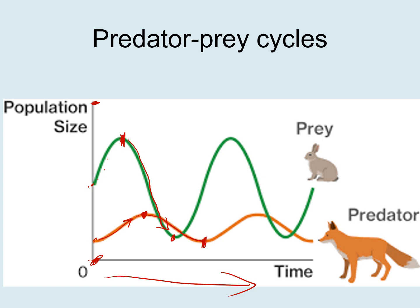As fox numbers go down, rabbits are preyed upon less, so more of them survive and their numbers rise again. It's not only predation that limits rabbit numbers — food, space, and other resources also play a role. What we get is a cyclical pattern: rabbit numbers go up and down, and fox numbers follow, slightly staggered in time, rising and falling behind the rabbit population.